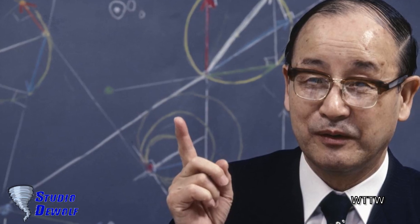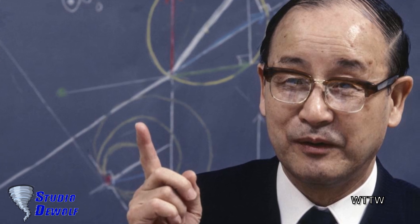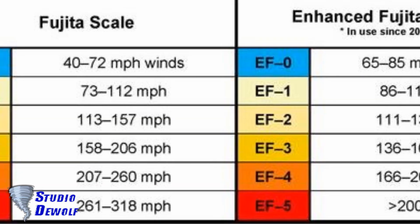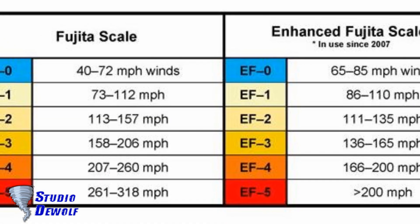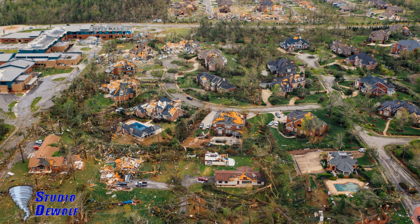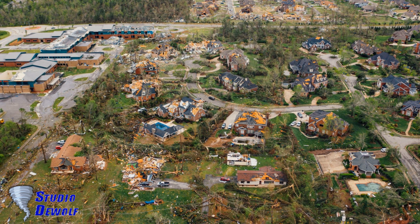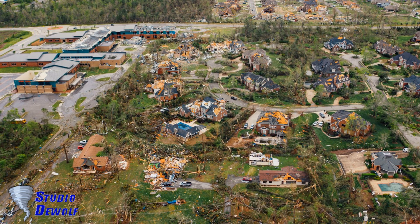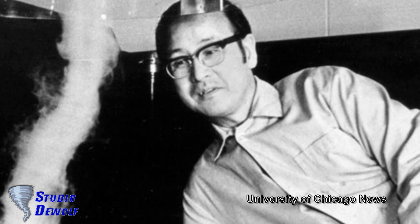This scale replaced the Fujita Scale that was introduced in 1971 by Ted Fujita in collaboration with Alan Pearson. The scale has the same basic design as the original Fujita Scale — six intensity categories from 0 to 5, representing increasing degrees of damage. It was revised to reflect better examinations of tornado damage surveys, in order to align wind speeds more closely with associated storm damage.